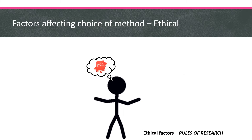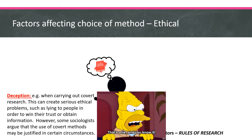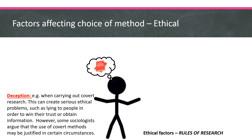The next factor affecting choice of method is the ethical factor — the rules of conducting research. The first rule is deception. When conducting research, you want to avoid deception; deceiving people is not desirable. However, in some circumstances it is a necessary thing to do, such as in covert participant observation or a lab experiment, where some deception may be needed to get a true reflection of the sample's views or behaviour. But ultimately, you want to try to avoid deception as much as you can.